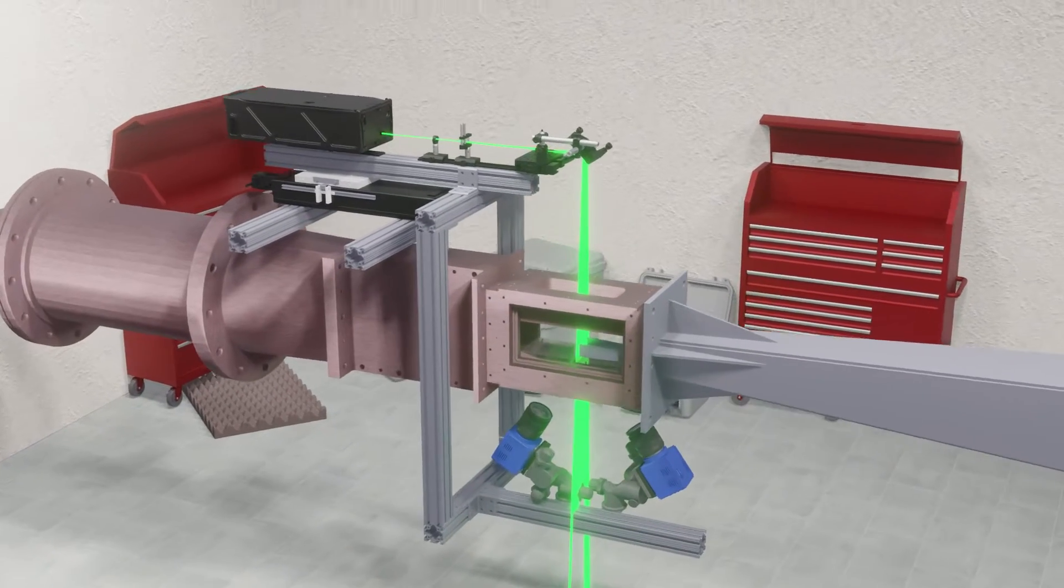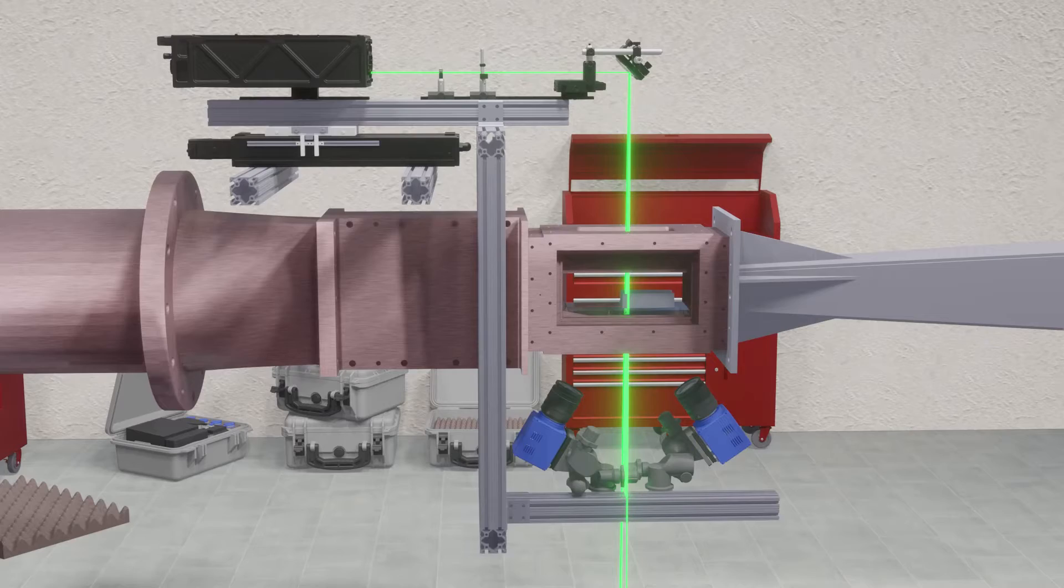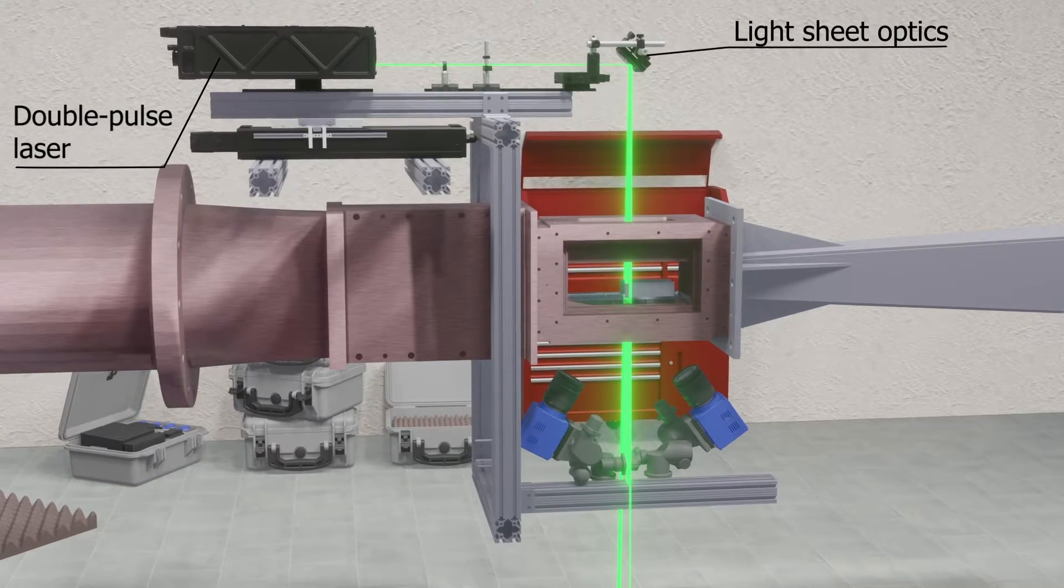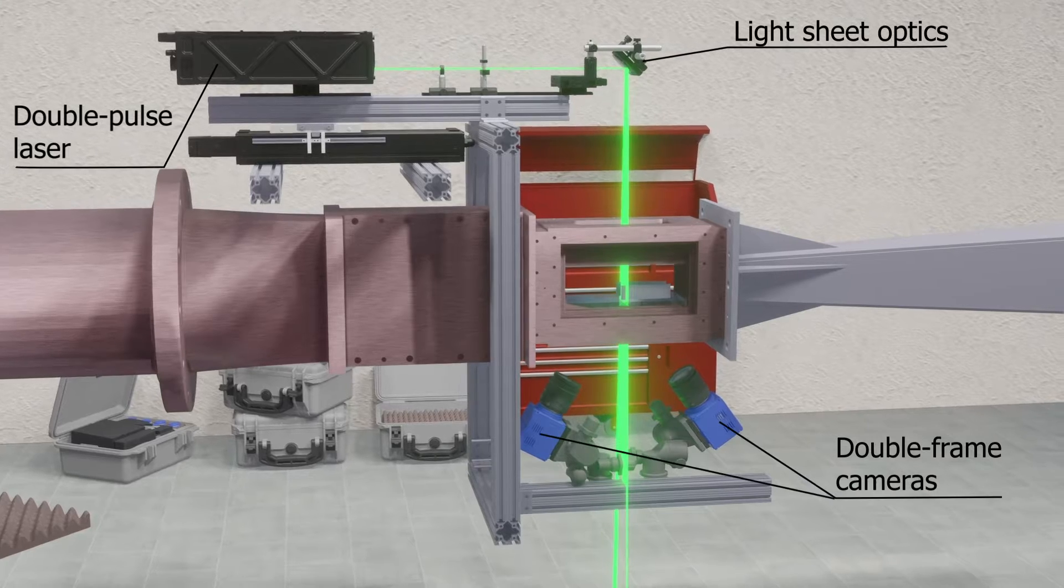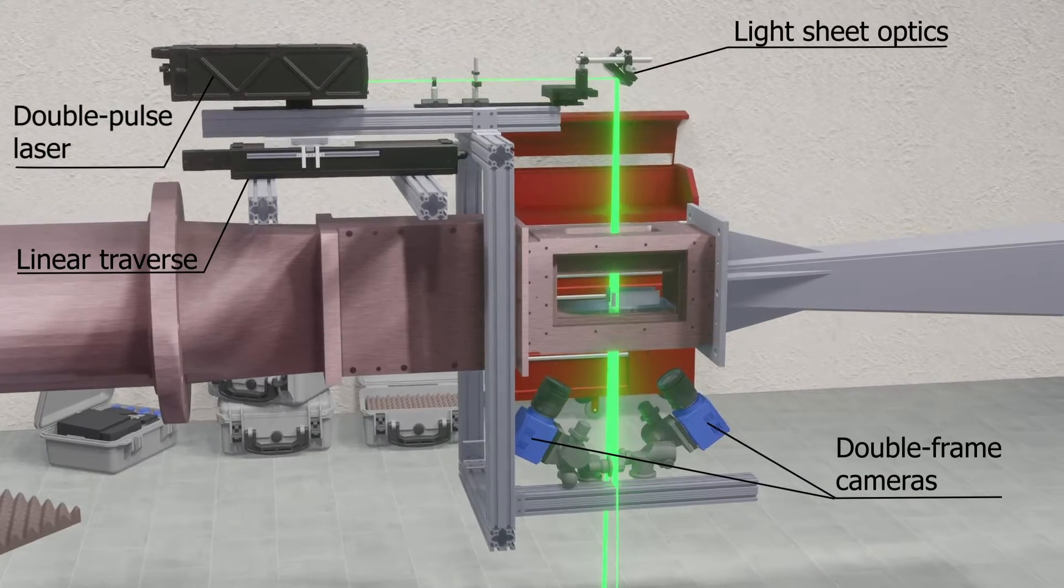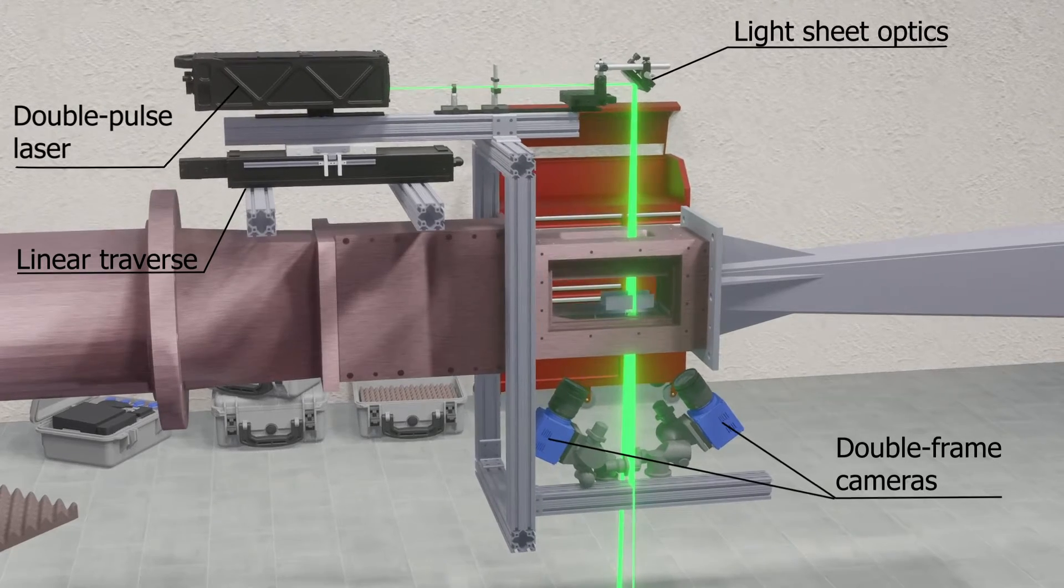The general setup is a regular stereoscopic PIV system. We have a double pulse laser with a light sheet optics and a set of two double frame cameras. We mount the entire system on a traverse mechanism such that everything moves together cameras laser and optics.